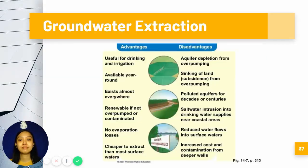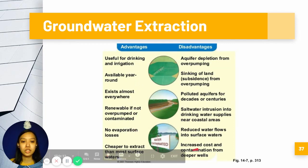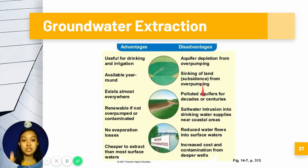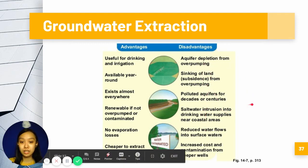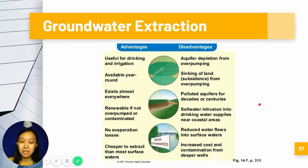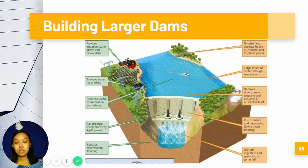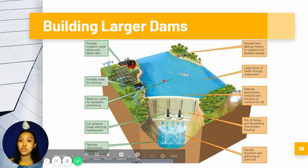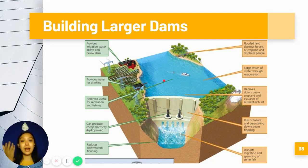First, we have groundwater extraction. Recall that there are disadvantages to the continuous use of groundwater, because it does not replenish easily. We can also build larger dams; however, with larger dams we may also build larger problems. There should be a balance between supplying water for people and taking care of the environment.